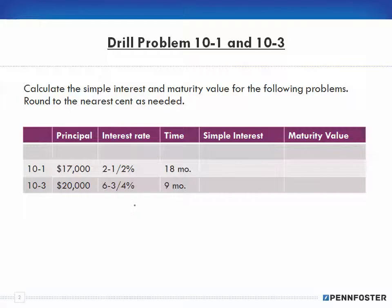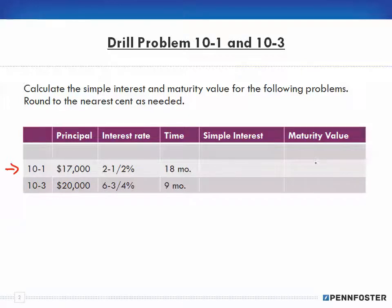Problem 10-1: the principal is $17,000, the interest rate is two and a half percent — remember that's an annual interest rate — and the time frame is 18 months. We want to find the simple interest and the maturity value.